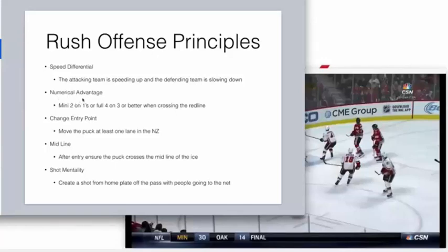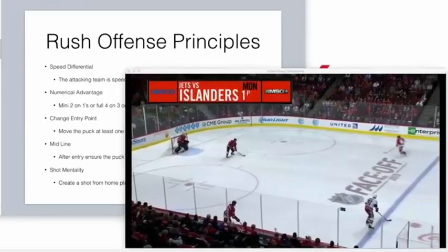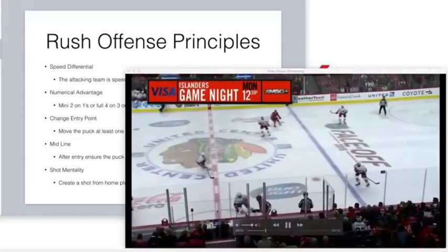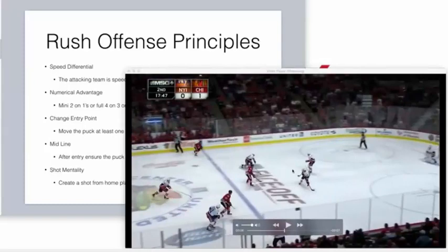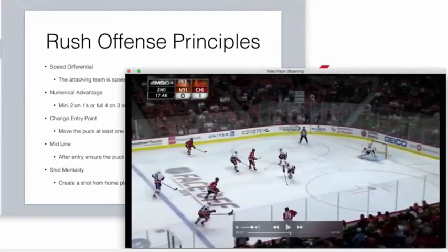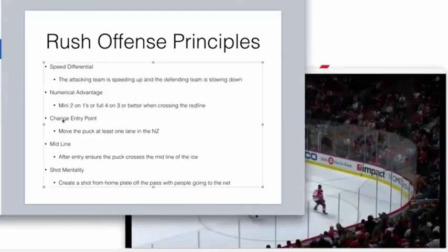Numerical advantage — mini two-on-ones or full four on three — is better when you're crossing the red line. Once he gets the puck here without an advantage, he moves the puck back. Now when Kane enters, he has a mini two-on-one right here. He also has a two-on-one there, and there's another option inside. These are mini two-on-ones — not a full two-on-one rush, but small two-on-ones he can create — and he creates a chance for his guy to walk in and shoot.